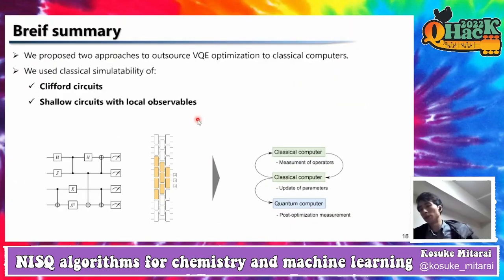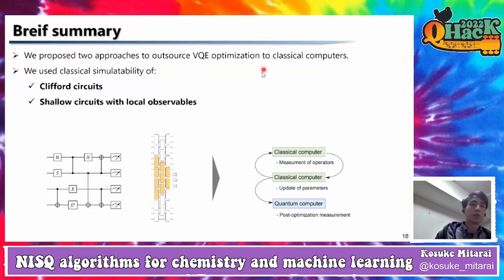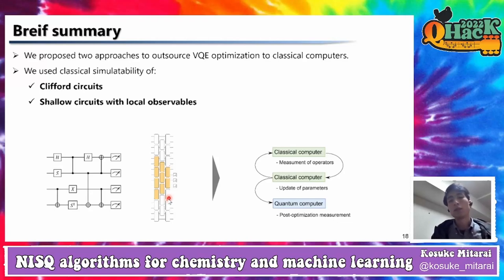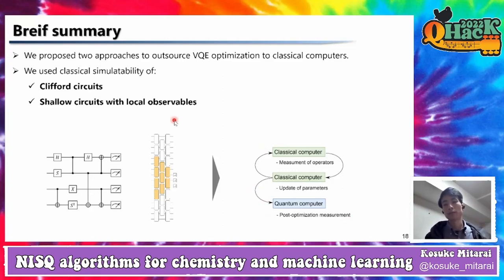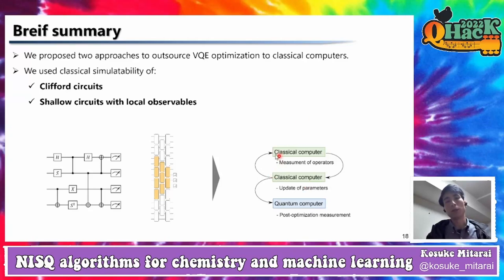To summarize to this point: we propose two approaches to outsource VQE optimization to classical computers. We use Clifford circuit simulatability and shallow circuit simulatability to achieve a scheme where we use a classical computer to optimize the VQE circuit, and only use the quantum computer at the final evaluation after the optimization.